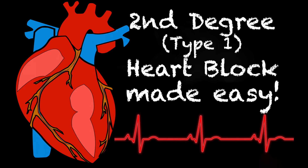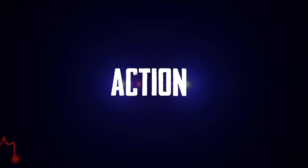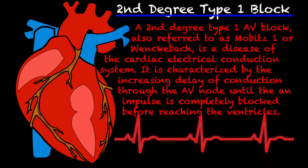First let's define a second degree type 1. A second degree type 1 atrioventricular block, also referred to as a Mobitz 1 or a Wenckebach, is a disease of the cardiac electrical conduction system. It's characterized by the increasing delay of conduction through the AV node until an impulse is completely blocked before reaching the ventricles, and this is manifested on the 4-lead or the 12-lead by a dropped QRS complex.